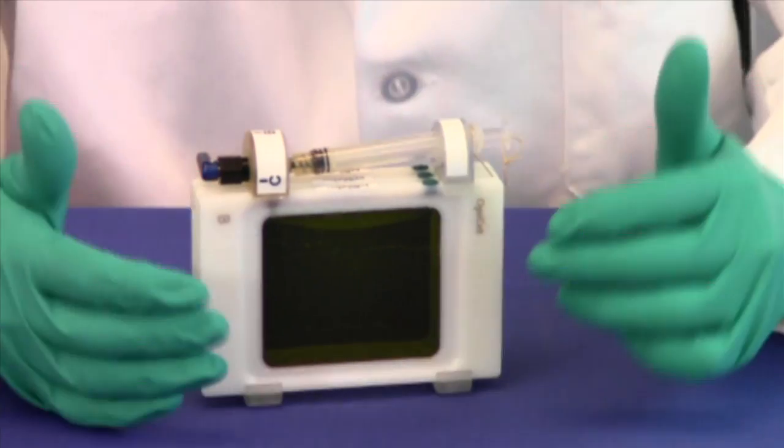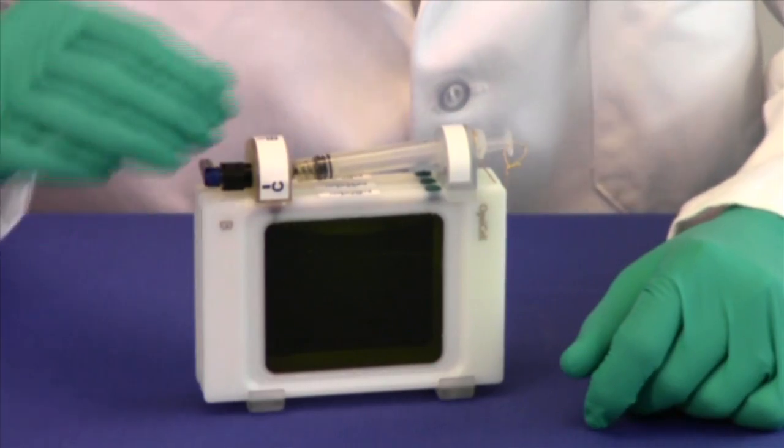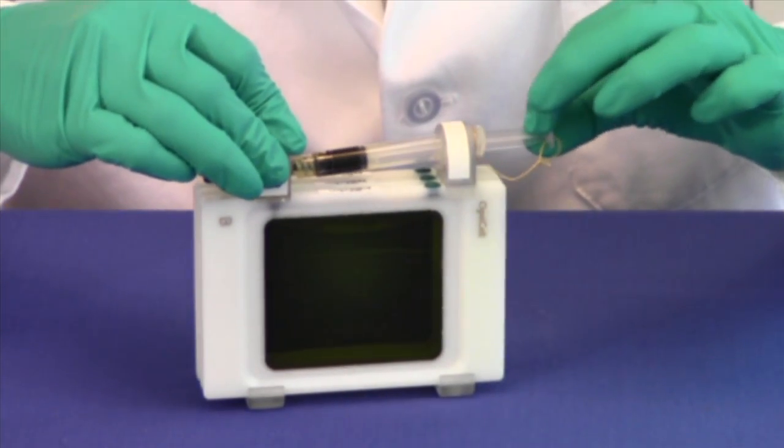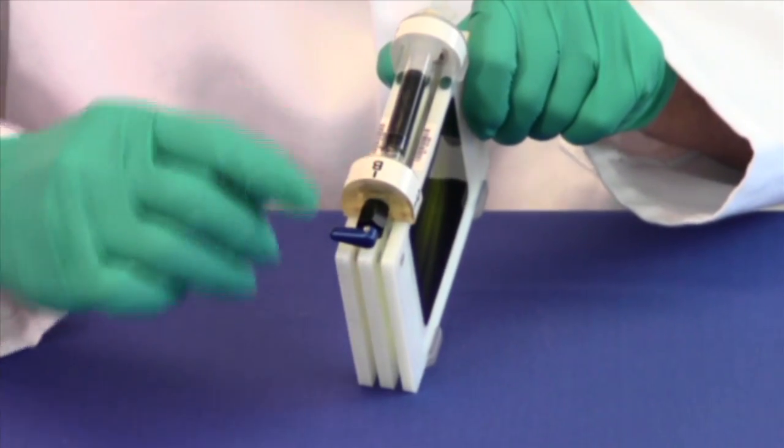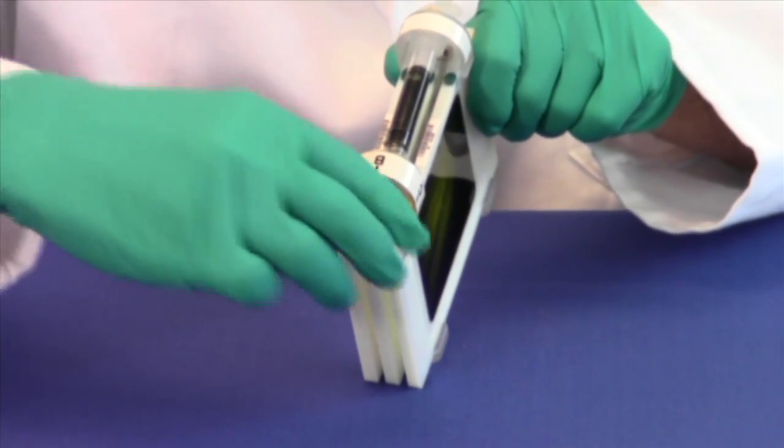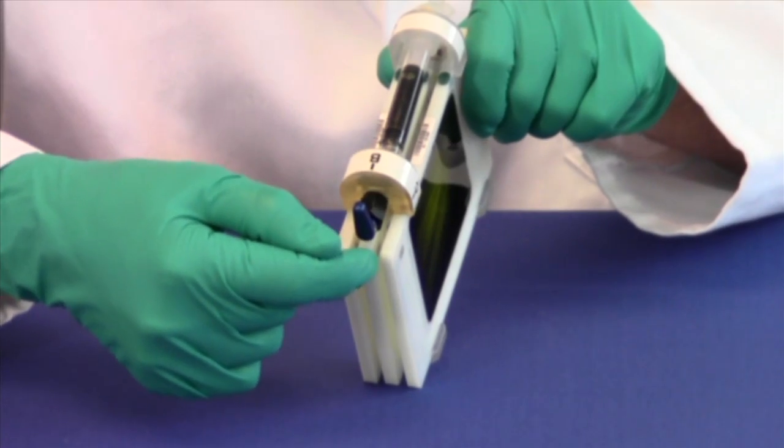After allowing the bacteria to grow in OptiCell A, we withdrew a sample and moved the valve handle to the B position. What this does is connect the syringe to the OptiCell in the middle.